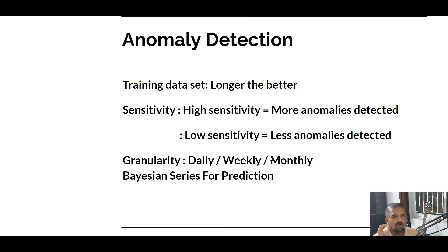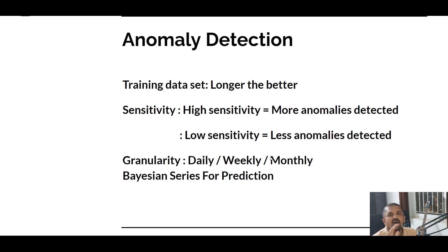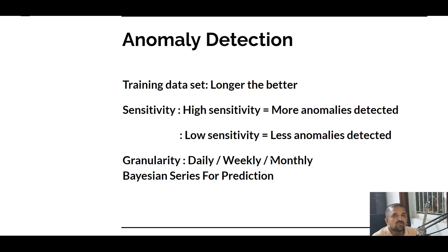On another note, it would be great if we could have annotations alongside anomalies. Universal Analytics had annotations, and just imagine how much clearer the cause-and-effect relationship would be if GA4 had them too. Unfortunately, Google Analytics 4 currently has no annotations, so you'll have to maintain your campaign and product release database offline in a spreadsheet and then map it with anomalies. Hopefully Google Analytics 4 will add annotations soon to make anomaly detection a much more robust feature.